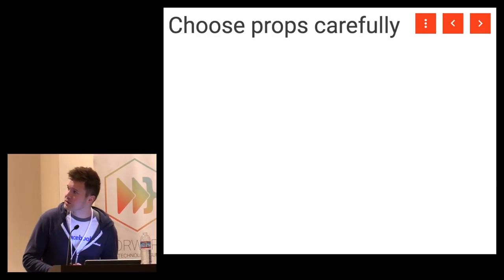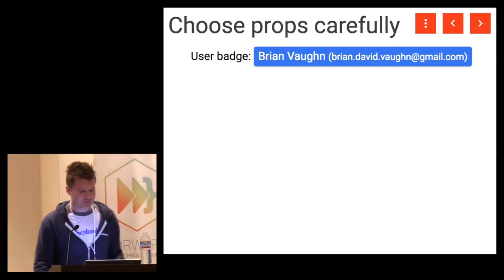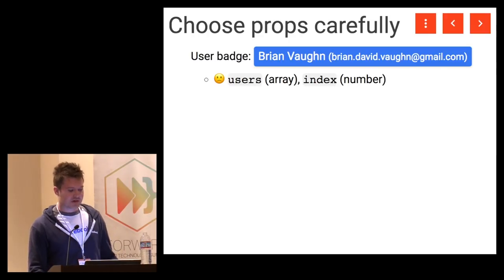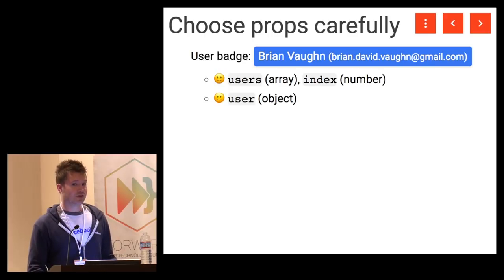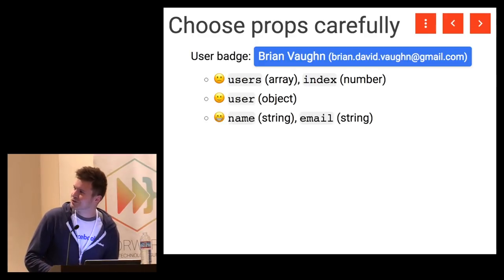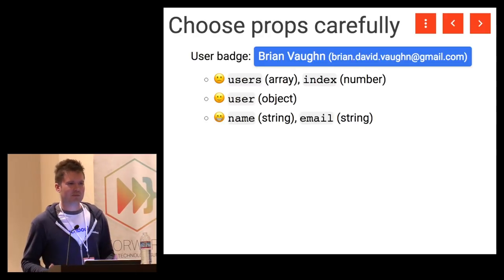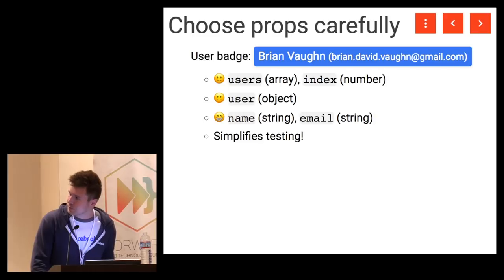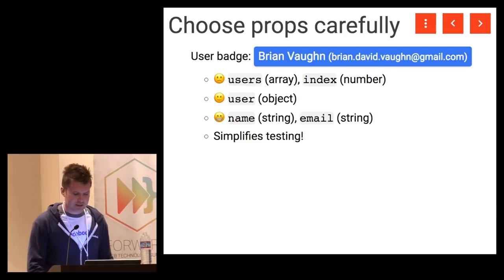Another tip is to choose your properties carefully. If we're building a user badge that displays someone's name and email, we could have properties for a users collection and an index — but if the users array changes, all badges re-render. We could use a user object property, which is better. Or even better, just pass the name and email directly. If unrelated things change, the component doesn't need to re-render. This also simplifies testing because you don't have to mock and set up as much surrounding application state.